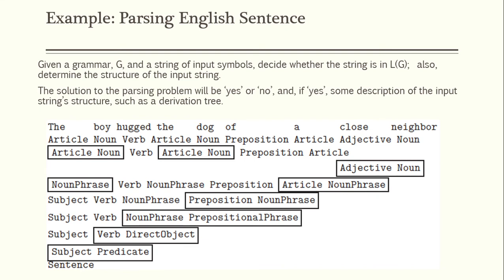For example, given an English grammar and a string of input symbols, we decide whether the string is in the language and determine its structure. The answer to the parsing problem is simply yes or no. Consider the sentence: 'the boy hugged the dog of a close never'. The grammar below contains the production rules for English sentences, similar to what you can find online.